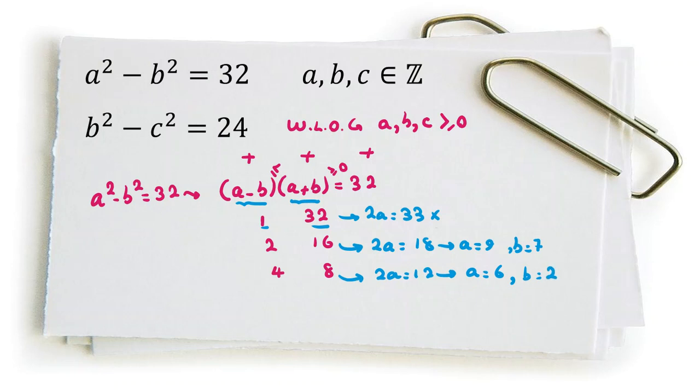Now by this case the first equation will be satisfied, a squared minus b squared. Now we should focus on the second equation. Let's consider the first case.